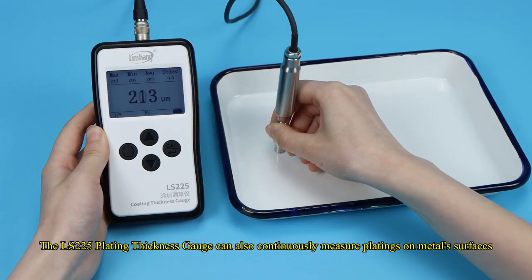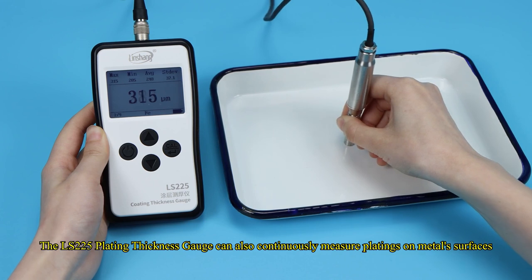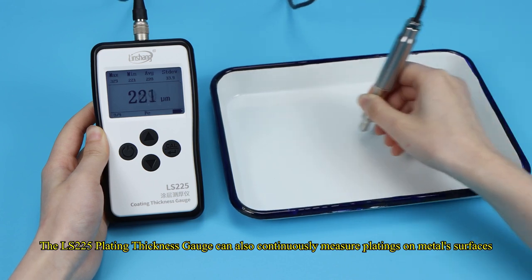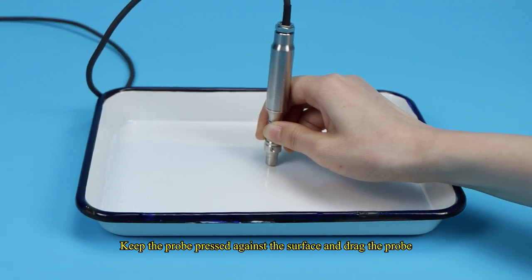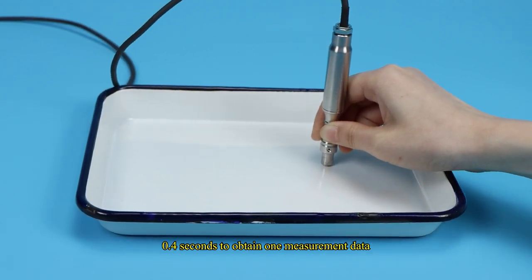The LS-225 plating thickness gauge can also continuously measure platings on metal surfaces. Keep the probe pressed against the surface and drag the probe. 0.4 seconds to obtain one measurement data.